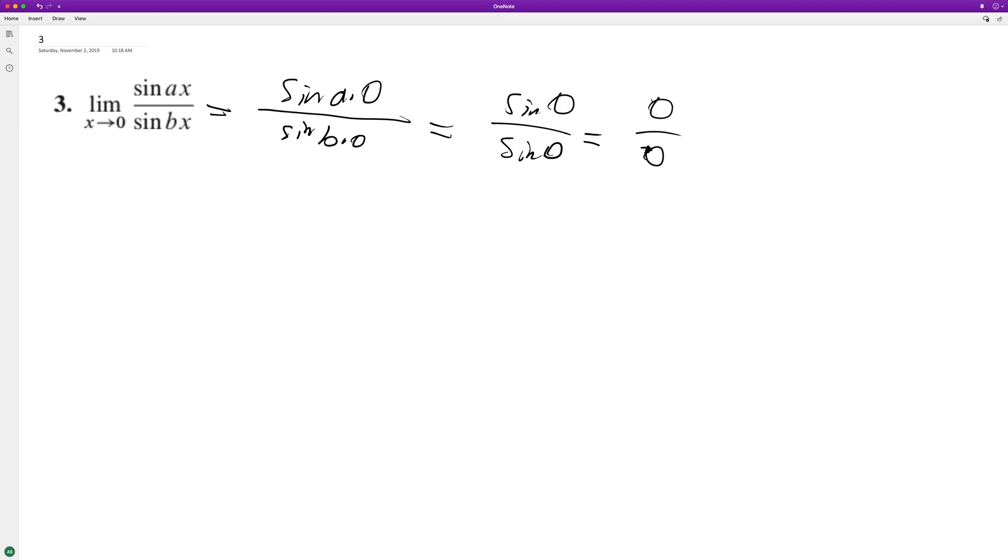When we do that, we take the derivative of the inside. Derivative of x is just one, so we get a cosine of ax times a, or b times the cosine of bx on the bottom.